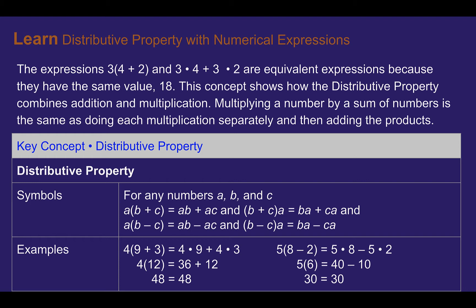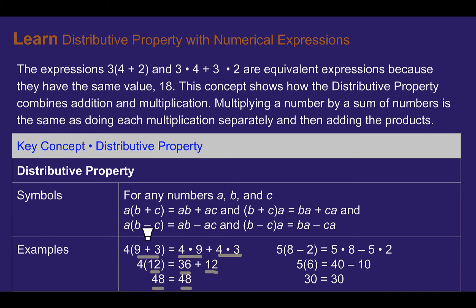Let's look at our numerical examples. We have 4 times 9 plus 3, shown as 4 times 9 plus 4 times 3. If we add first, we get 12, then 4 times 12 is 48. Or if we multiply first — each of those things multiplied by 4 — we get 36 plus 12, which is also 48. So adding the numbers first works, or multiplying each of the numbers first works.